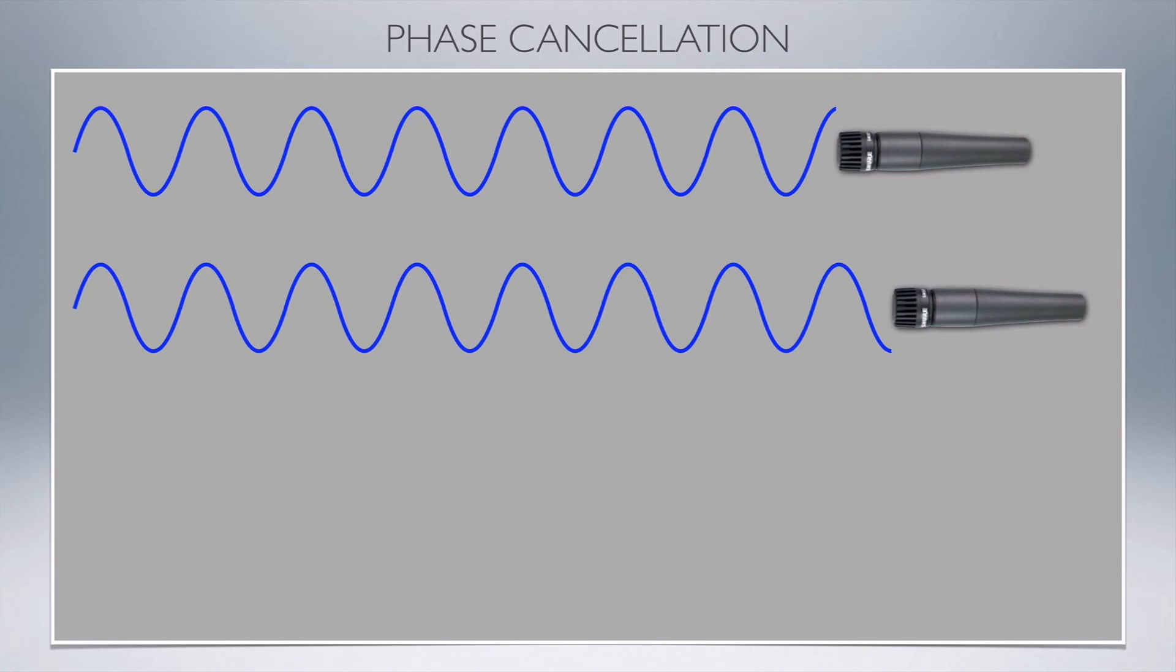If you've learned anything about physics before, or even seen waves crashing against each other, if you have a crest hitting a trough, they'll actually cancel each other out. You'll have phase cancellation, so at this particular frequency, those two frequencies will cancel each other out.